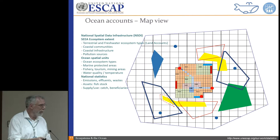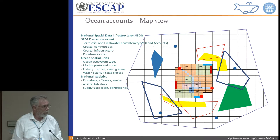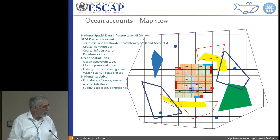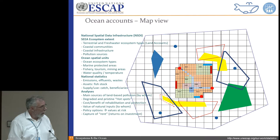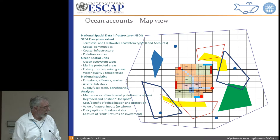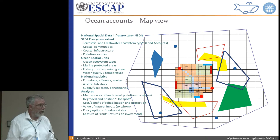Many countries have information on their effluents, wastewater, emissions, and waste, but what we usually don't know is where those wastes are disposed. We know they're disposing of so many tons of plastic or cubic meters of wastewater, but we don't know where — that's one area of sophistication we'd like to bring in. We can look at fish stock data, the supply and uses of the catch, and who the beneficiaries are. We can look at main sources of land-based pollution, degraded and pristine hot spots, cost-benefit analyses of rehabilitation, and what values are at risk if we don't protect ocean ecosystems.